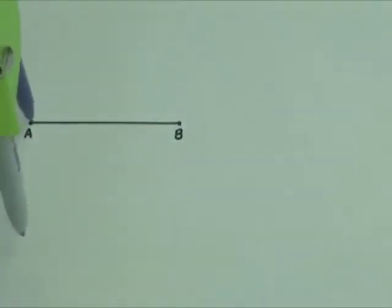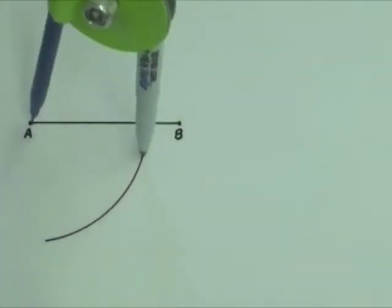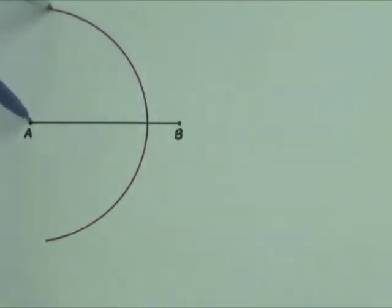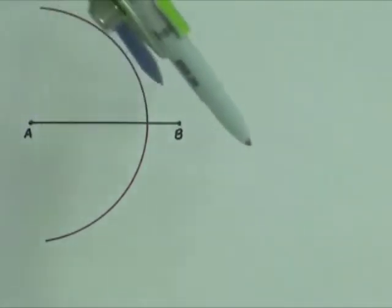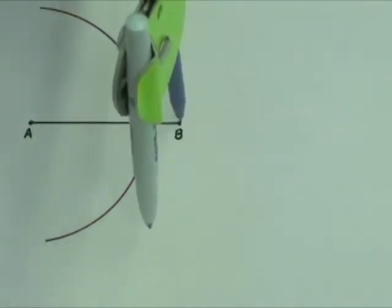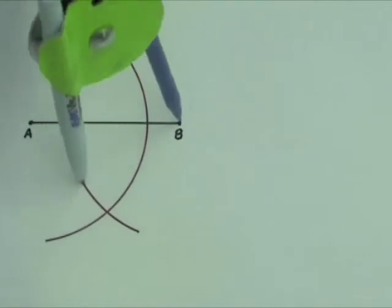Draw a large arc that intersects AB. Without changing the compass width, place the compass point on B and draw an arc that intersects the previous arc.